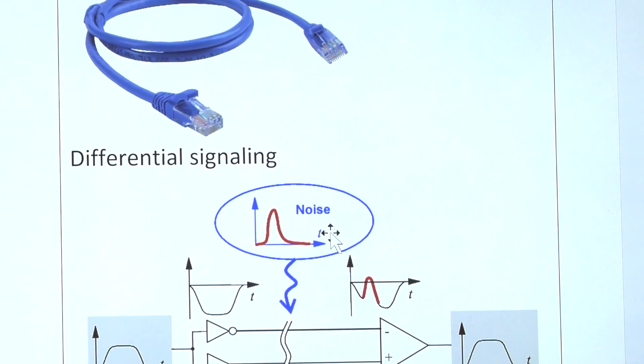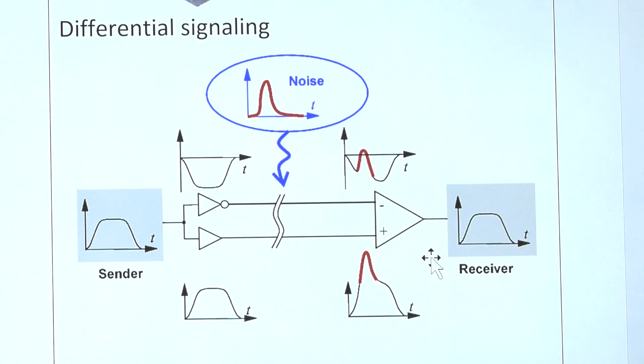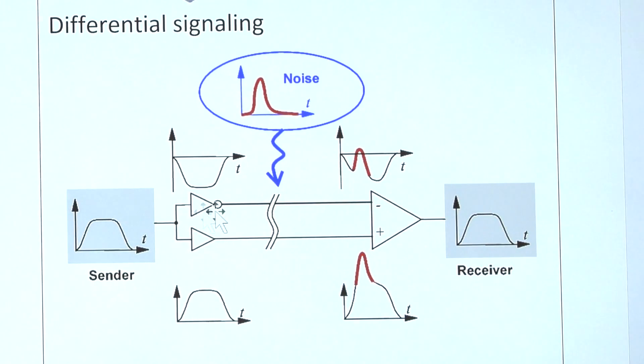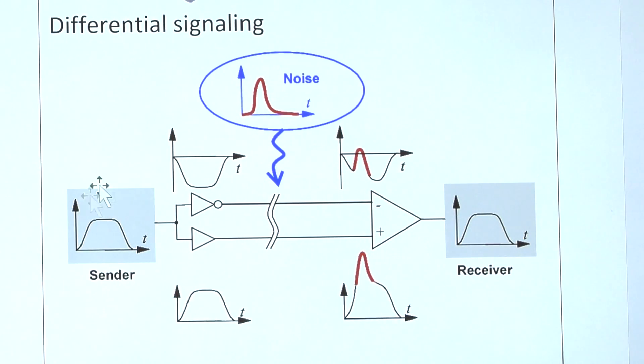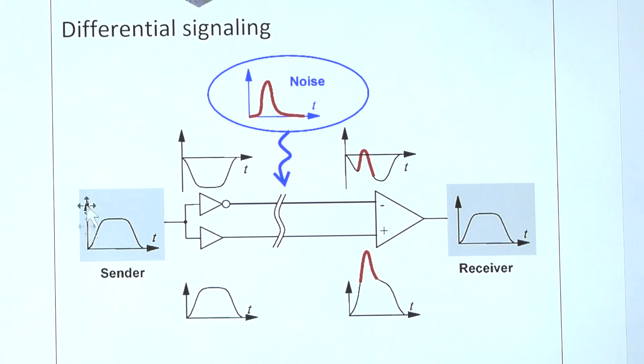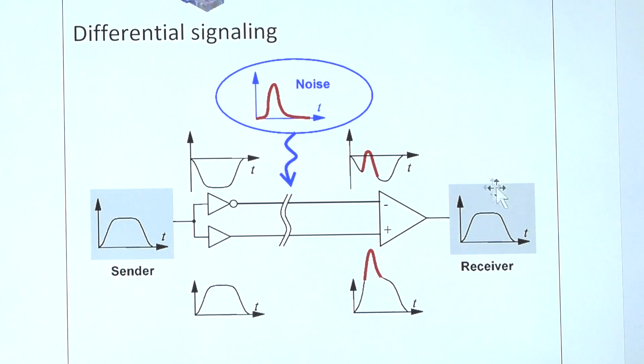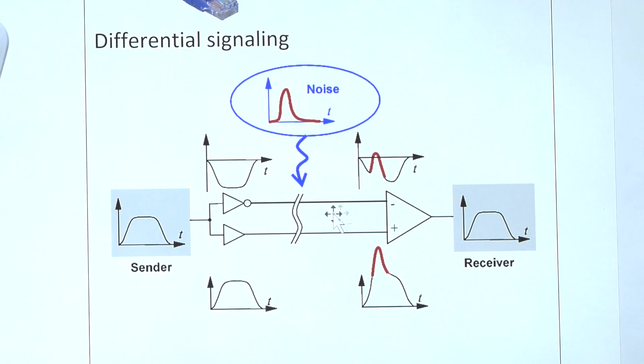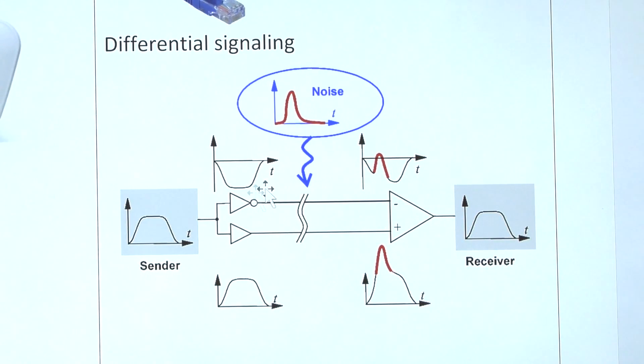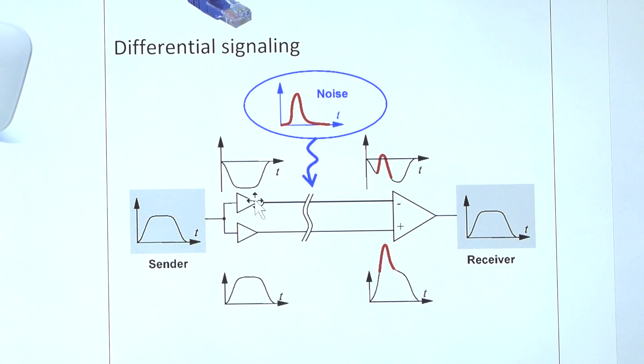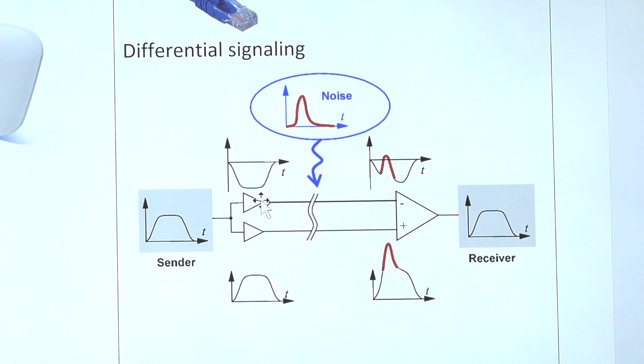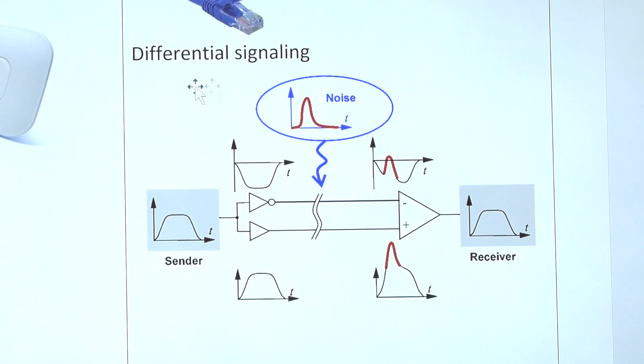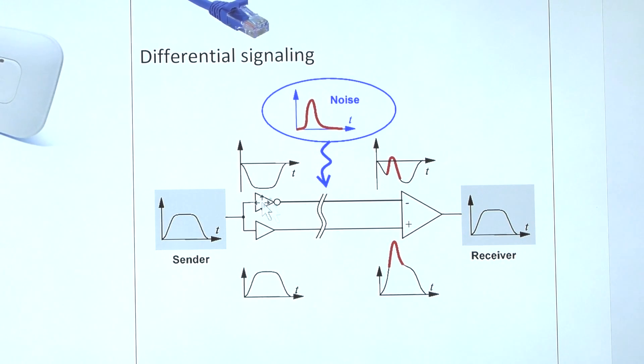When we transmit a signal from the switch port to a PC, we use what's known as differential signaling. I want you to look at this picture. This is the hub or the switch, this is your NIC, so this is your receiver, this is your sender, and this is the twisted pair cable.